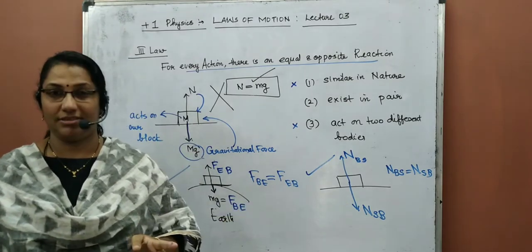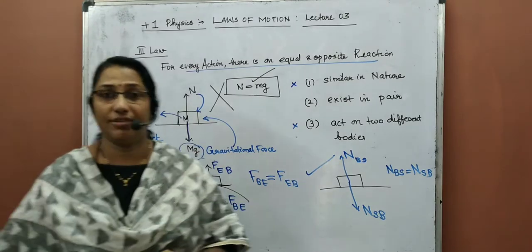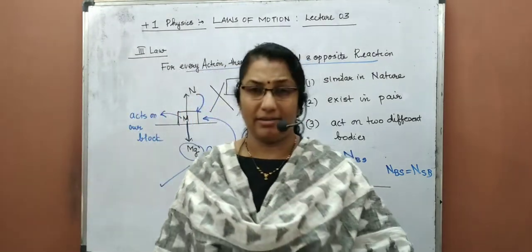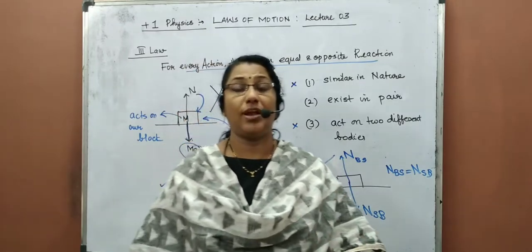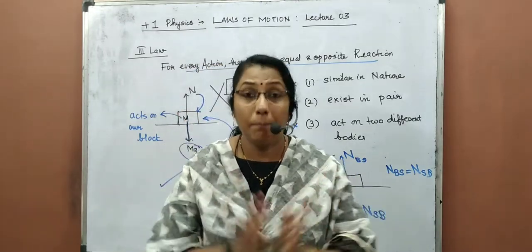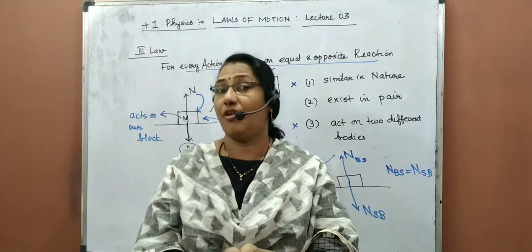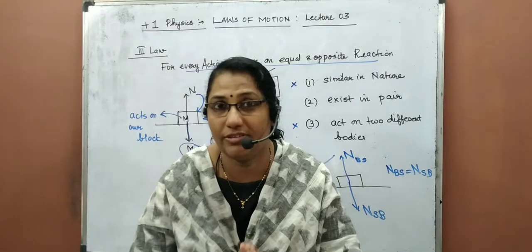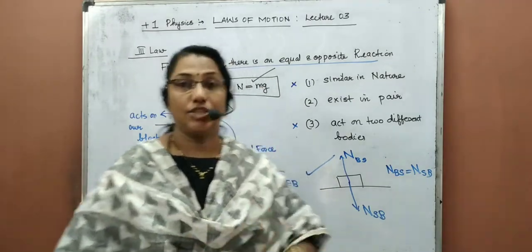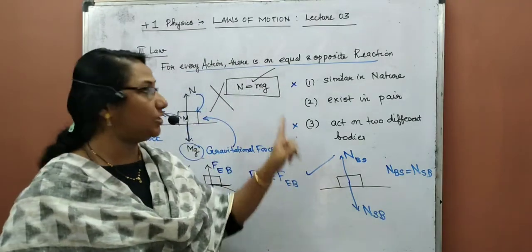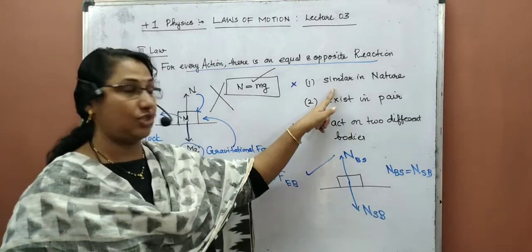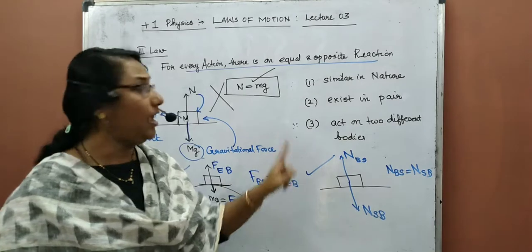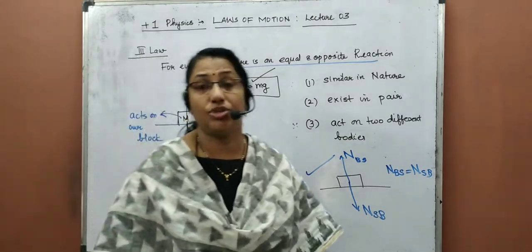Now we understood what is the action-reaction pair. Action-reaction pair must obey three conditions: first, they must be similar in nature; second, they exist in pairs; and third, they must act on two different bodies. These three conditions must be satisfied for a pair of forces to become an action-reaction pair.